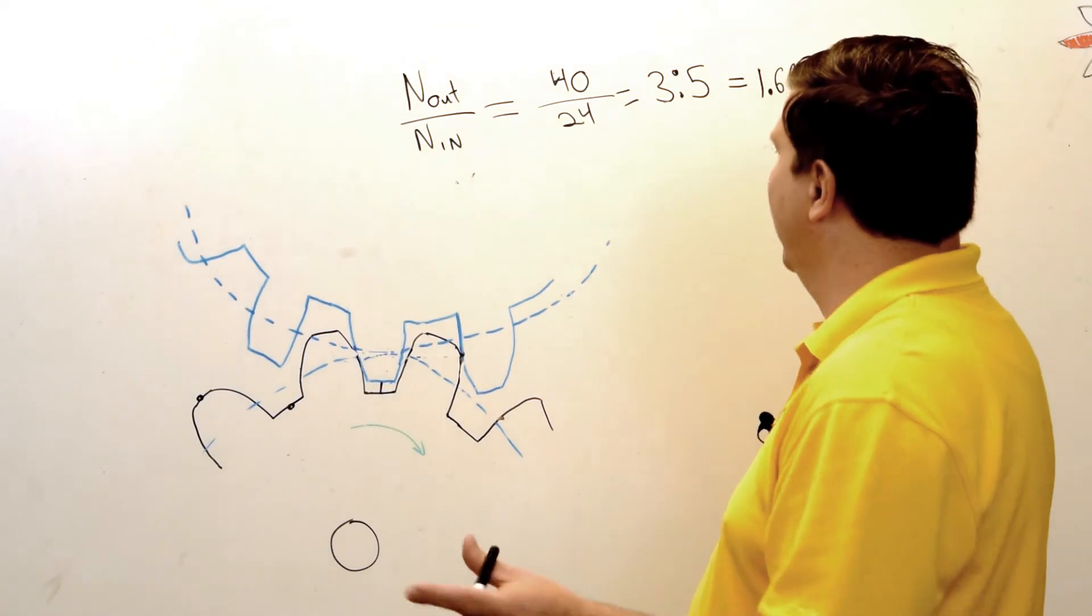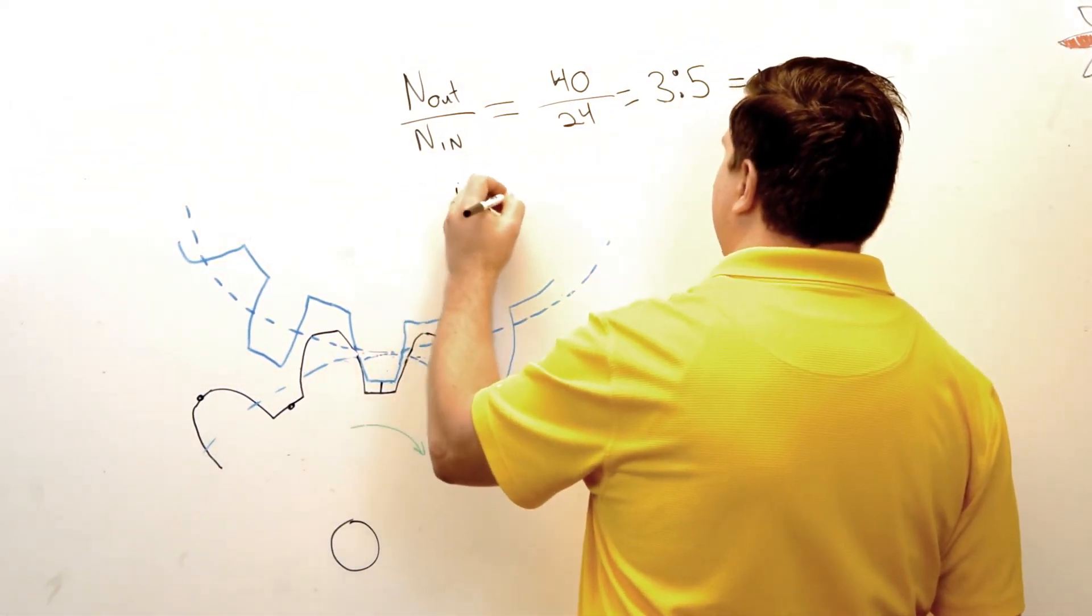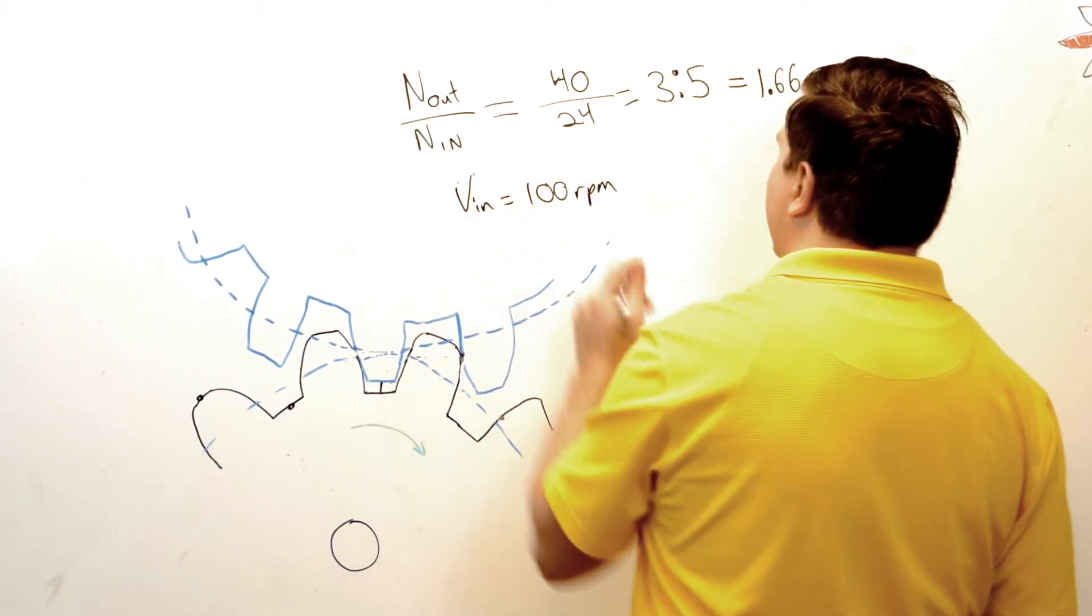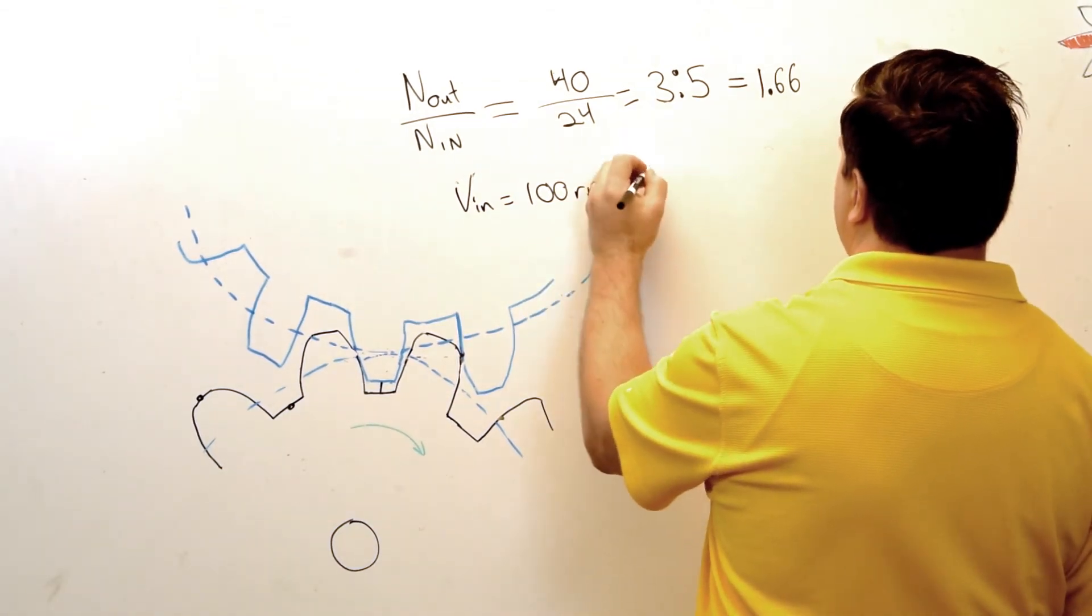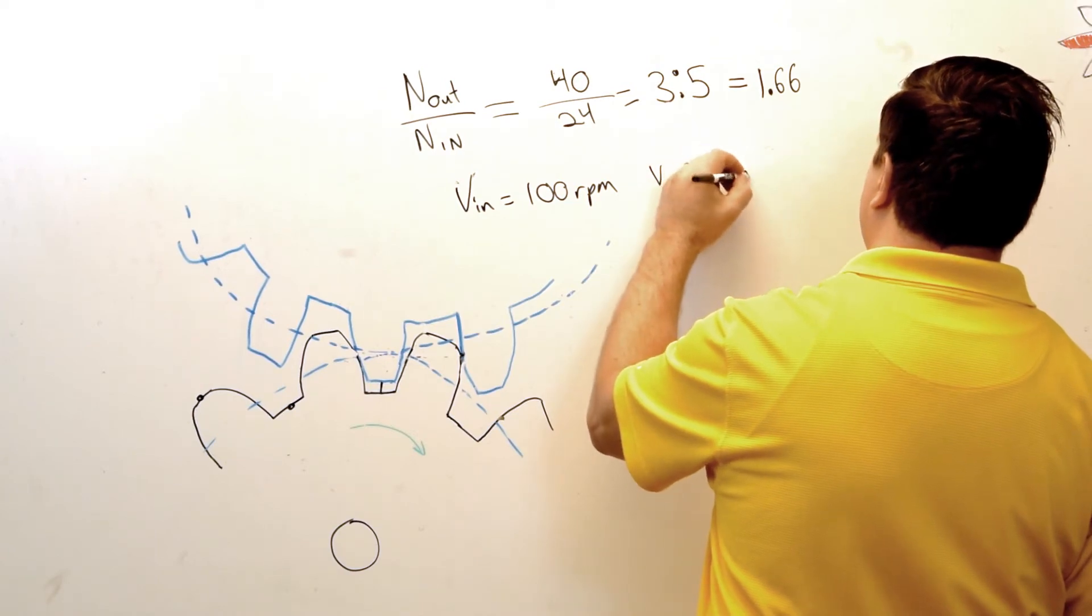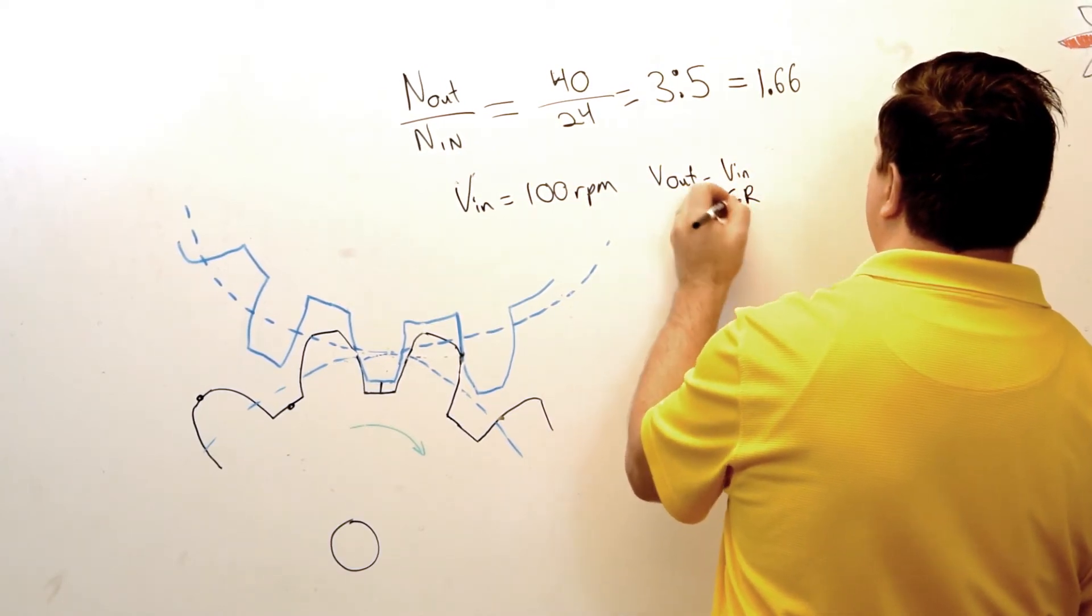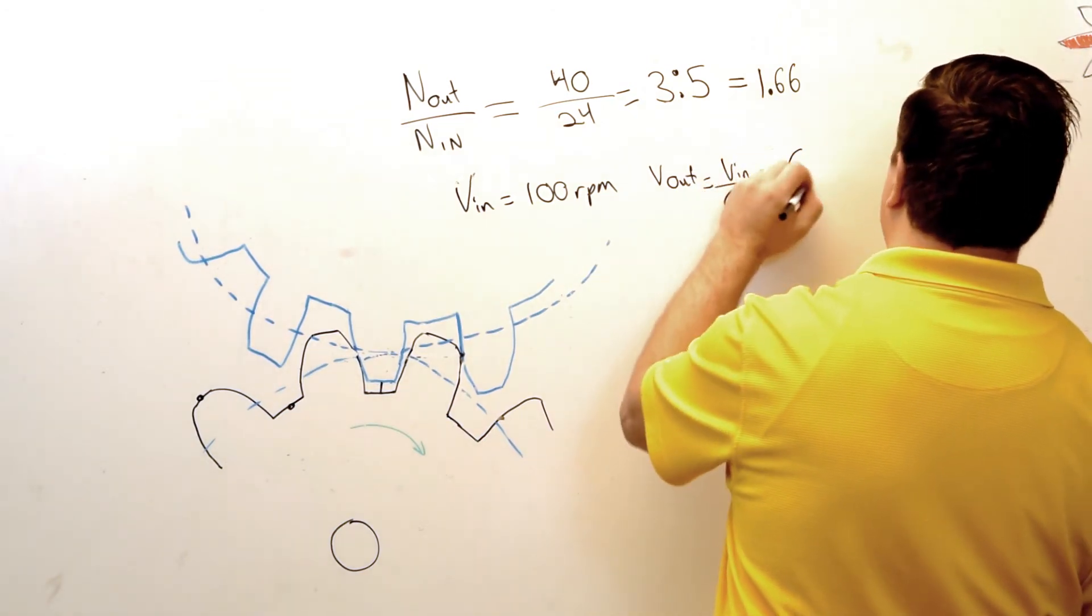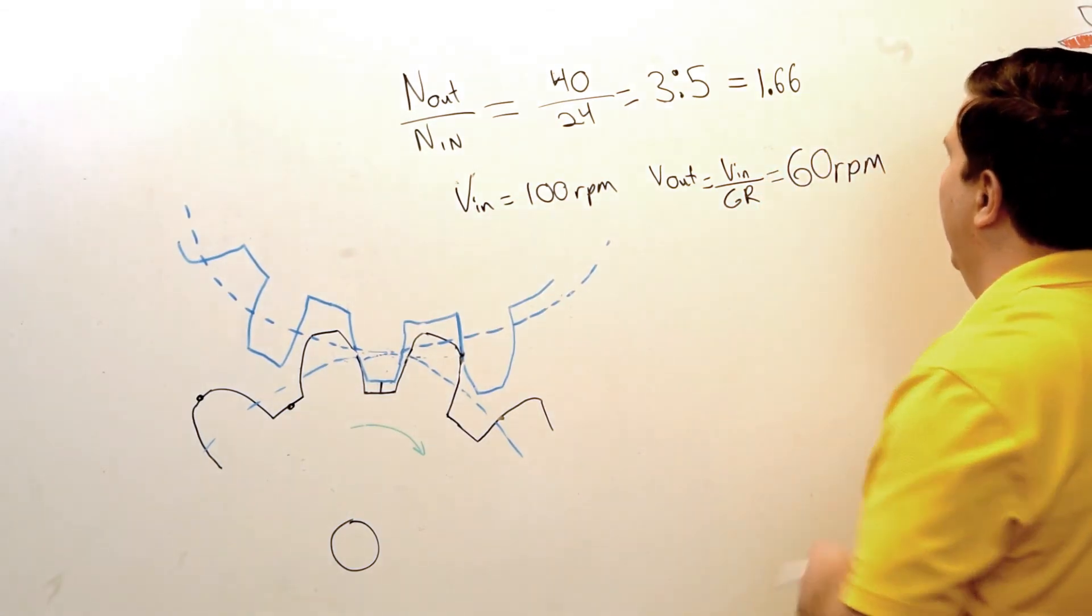So in our example, let's just say that our input gear is running at 100 RPM. We're going to do our output, which is V_out equals V_in over our gear ratio. So we get, it's exactly 60 RPM. 60 RPM out.